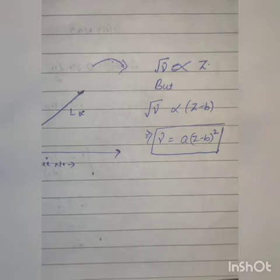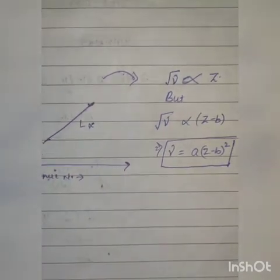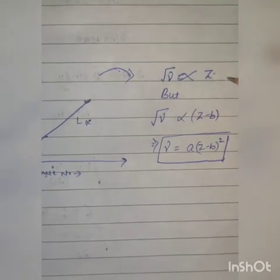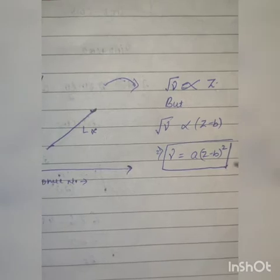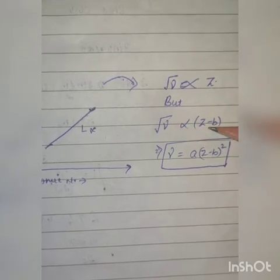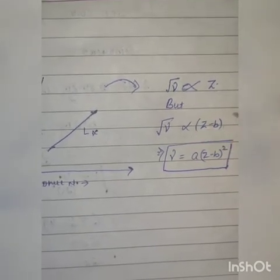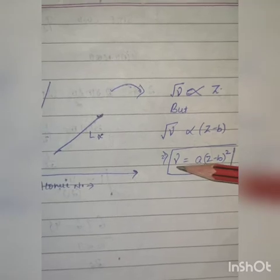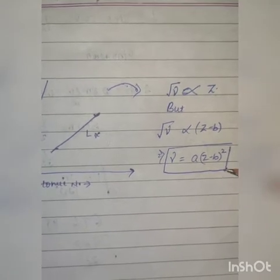Square root of the frequency and atomic number gives a straight line for k-alpha and L-alpha lines. We can say that root-nu is directly proportional to Z, but this does not match the experimental results. Hence, Moseley modified this as: root-nu is directly proportional to (Z − b), giving nu is proportional to (Z − b)². With proportionality constant A, we get nu = A(Z − b)², where A and B are constants.